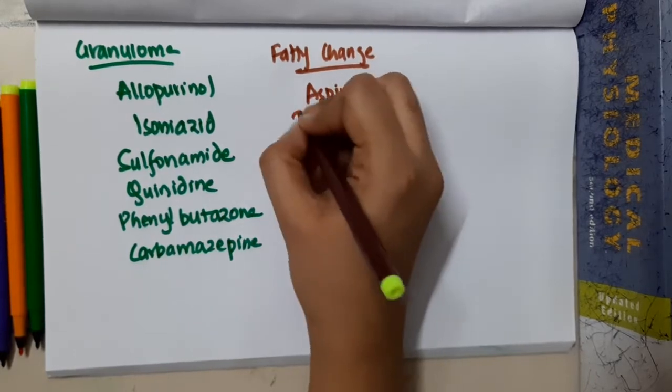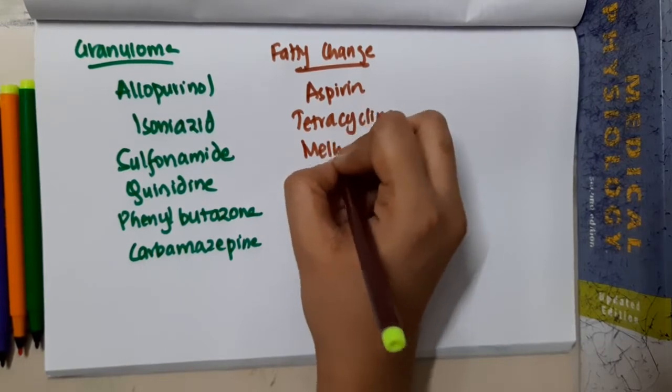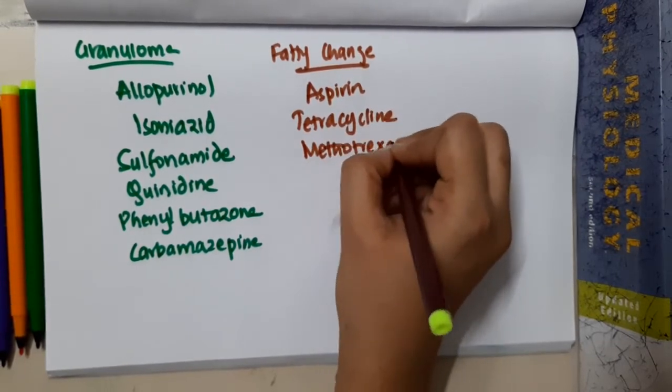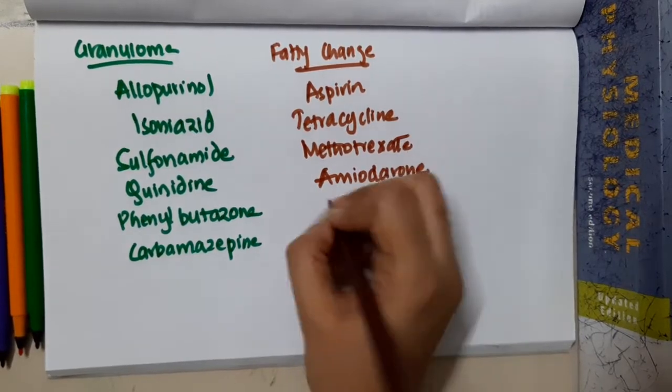What are the drugs which cause fatty change? Fatty change is seen in aspirin, tetracycline, methotrexate, amiodarone, and ketoprofen.